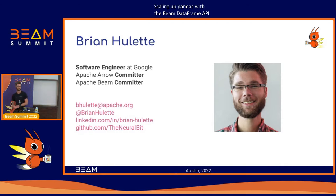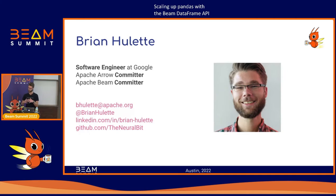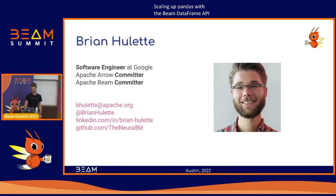Prior to that I worked on Apache Arrow. I contributed the initial JavaScript implementation of Apache Arrow, so I am also an Arrow committer. I'm really interested in finding ways to use those two things together. My GitHub handle is 'the neural bit,' which is an anagram of Brian Hewlett — so hopefully that makes sense when you see me commenting on your PRs.